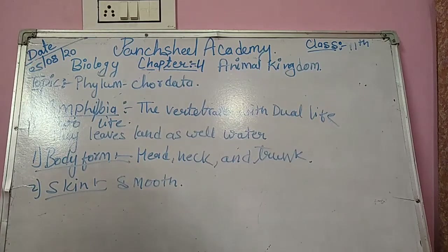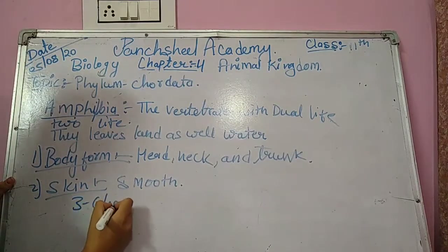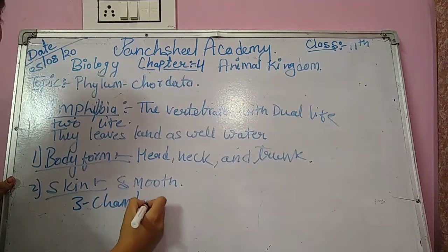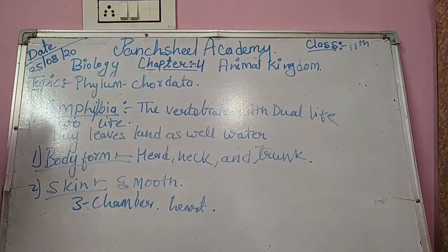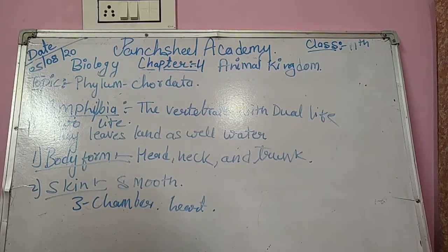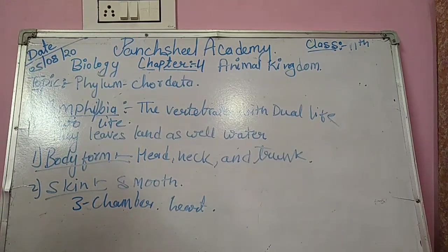The heart is three-chambered in amphibians — two auricles and one ventricle. There are 10 pairs of cranial nerves. Sense organs include olfactory receptors. Regarding the excretory system, kidneys are present. All olfactory receptors are present.